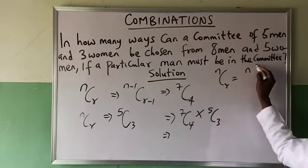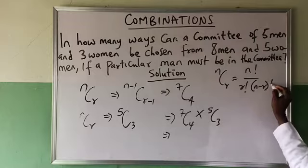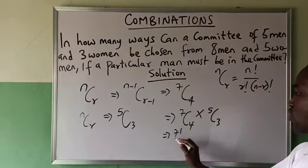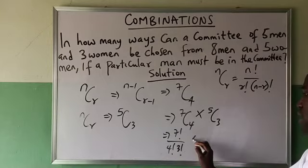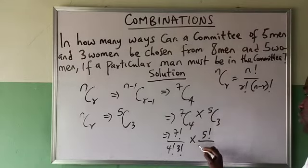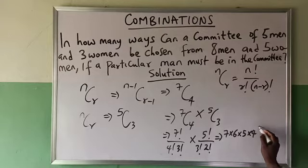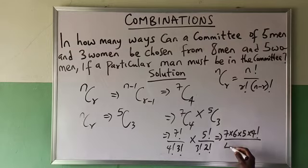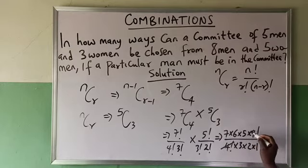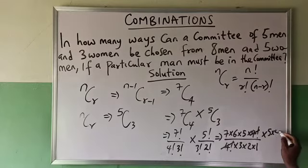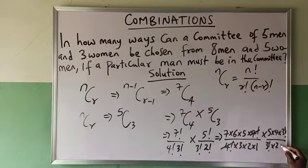n combination r means n factorial all over r factorial times n minus r factorial. So this means 7 factorial all over 4 factorial times 3 factorial, times 5 factorial all over 3 factorial times 5 minus 3 factorial. That means 7 times 6 times 5 times 4 factorial, all over 4 factorial times 3 times 2 times 1, times 5 times 4 times 3 factorial, all over 3 factorial times 2 times 1.